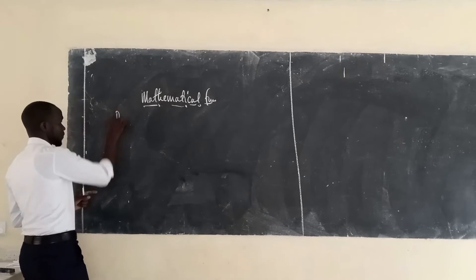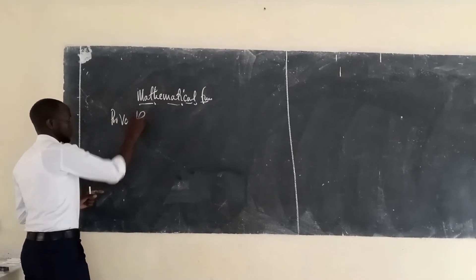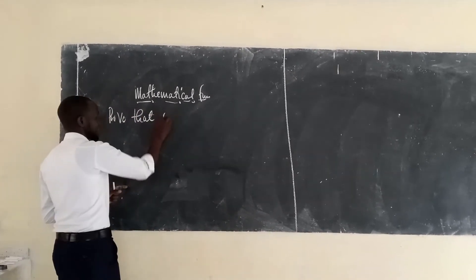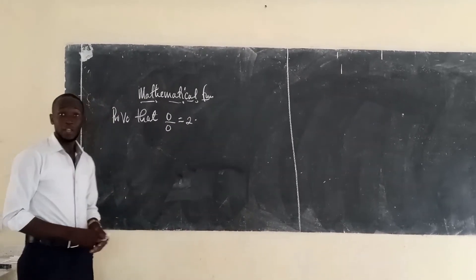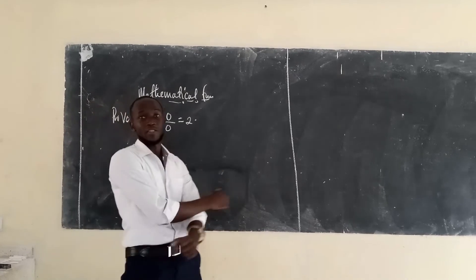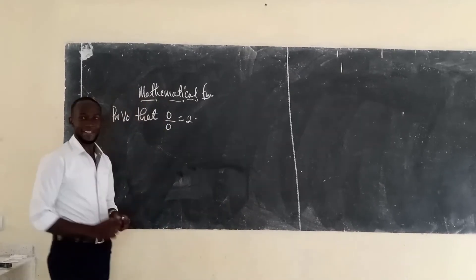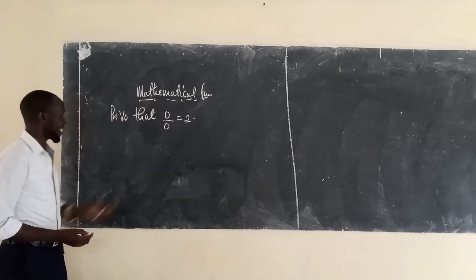So if somebody says, prove that zero divided by zero, you get a whole number. Can you imagine? Somebody tells you this. In fact, the first thing you will do, you may even slap. Of course, sometimes it will be unique to punch, but with mathematics, I think everything is possible.